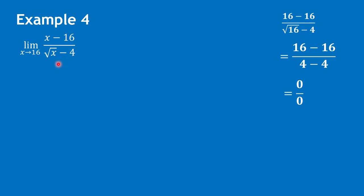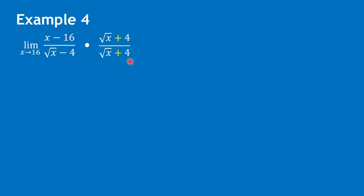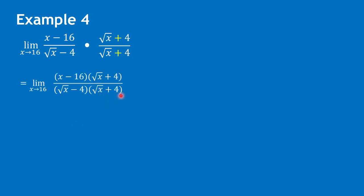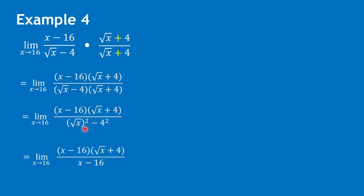Since the denominator is the square root of x minus 4, we multiply by the square root of x plus 4 over the square root of x plus 4. We just changed the sign of the denominator term. Since the denominator becomes the sum and difference of two binomials, we can use special products to simplify, giving us the square root of x squared minus 4 squared, which simplifies to x minus 16. We can cancel x minus 16, giving us the limit of the square root of x plus 4 as x approaches 16.